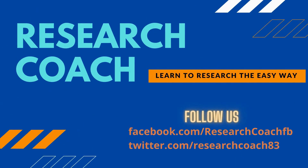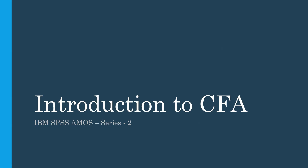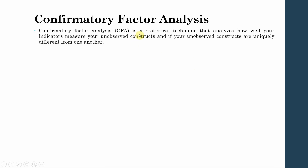In this session we are going to introduce confirmatory factor analysis. Confirmatory factor analysis is a statistical technique that analyzes how well your indicators measure your unobserved constructs, and whether your unobserved constructs are uniquely different from one another. Your unobserved construct is, for example, job satisfaction — measured through five or six items — or engagement, measured through four or five items.